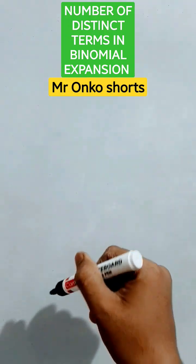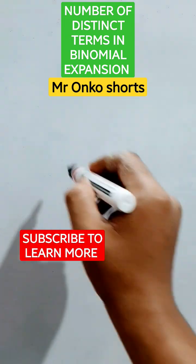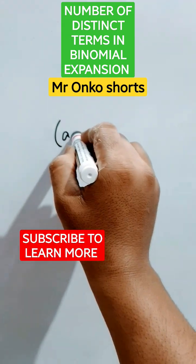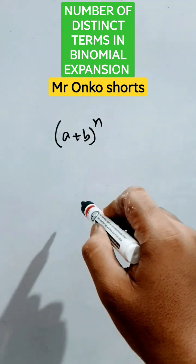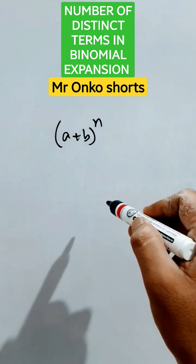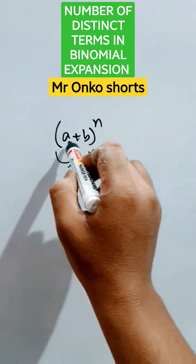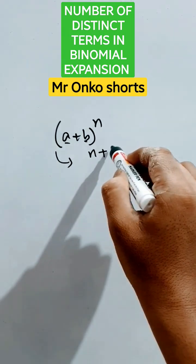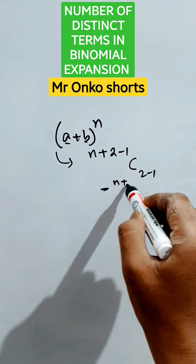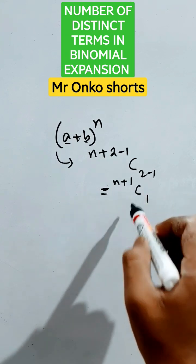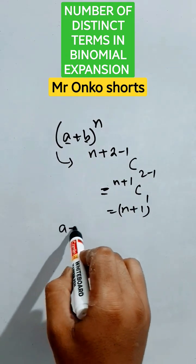Hello guys, welcome to Mr. Ronko Shorts. Today we will learn some interesting tricks for the binomial theorem. If (a + b) whole to the power n is given and you are asked to find how many distinct terms are there, the answer will be n+1C1, that is n+1 terms.